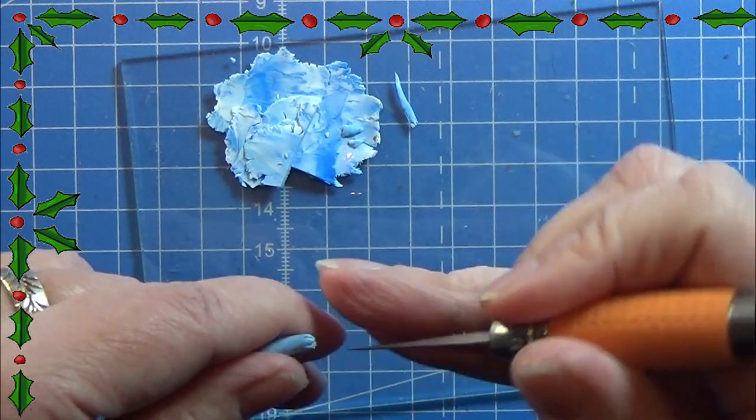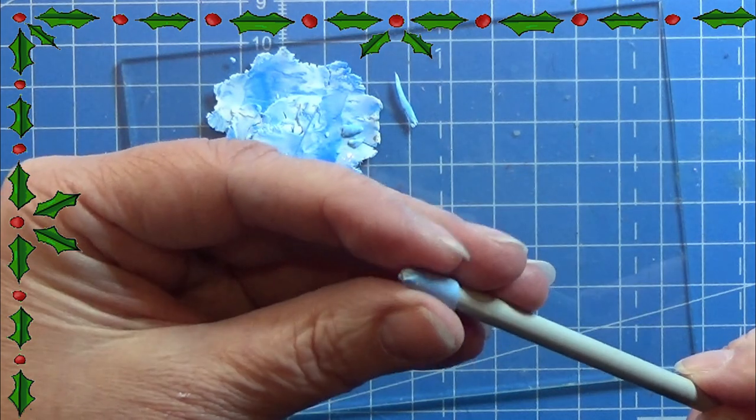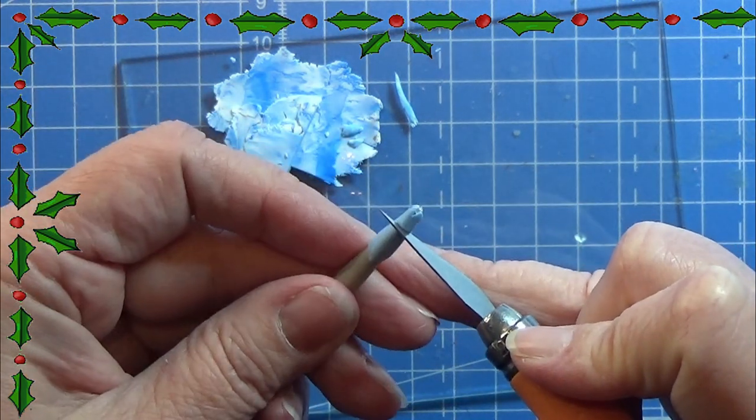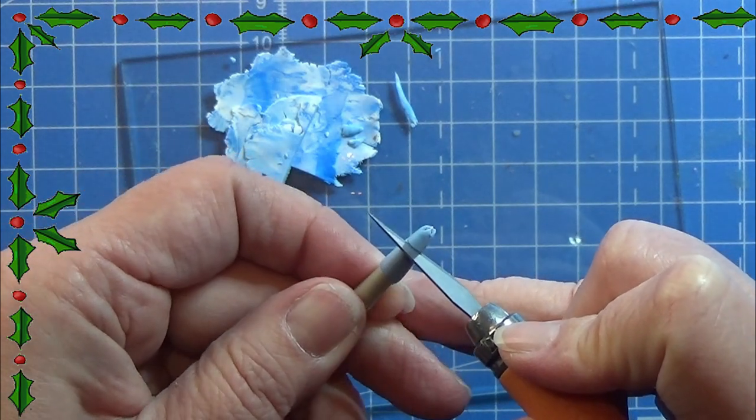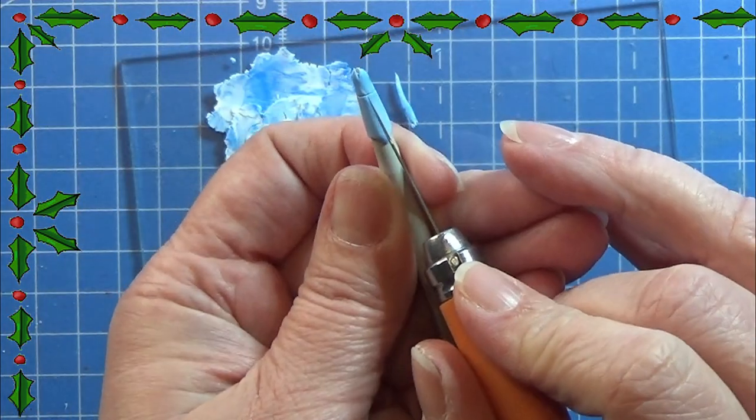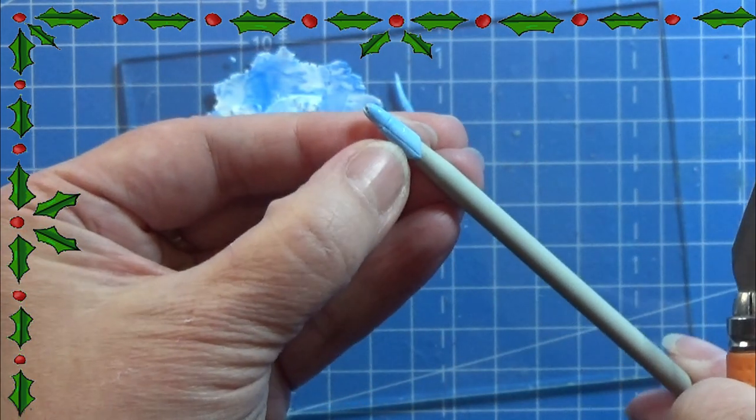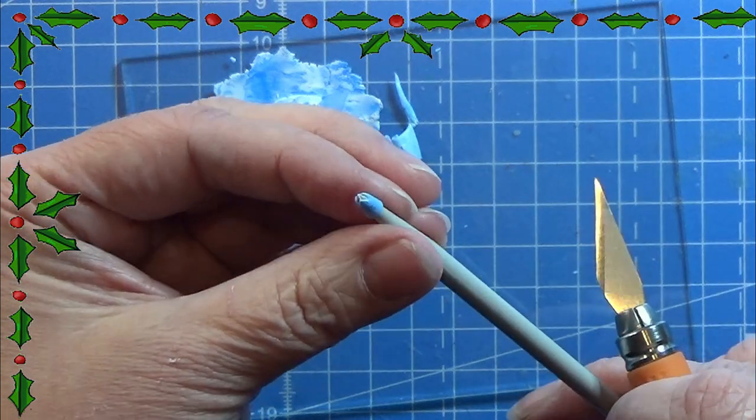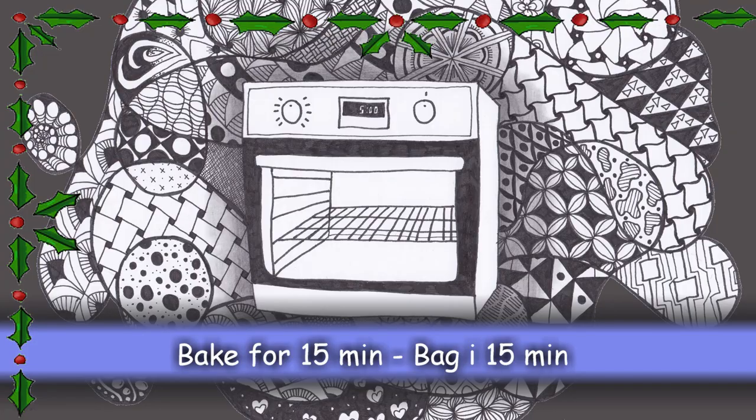When I'm happy with the tip of this little one, then I'm just cutting off the excess clay in the length so that this little tip has the length and the size that I want it to. Just like that. And you can of course make more of these and then bake them. I leave them on the knitting pin while baking.